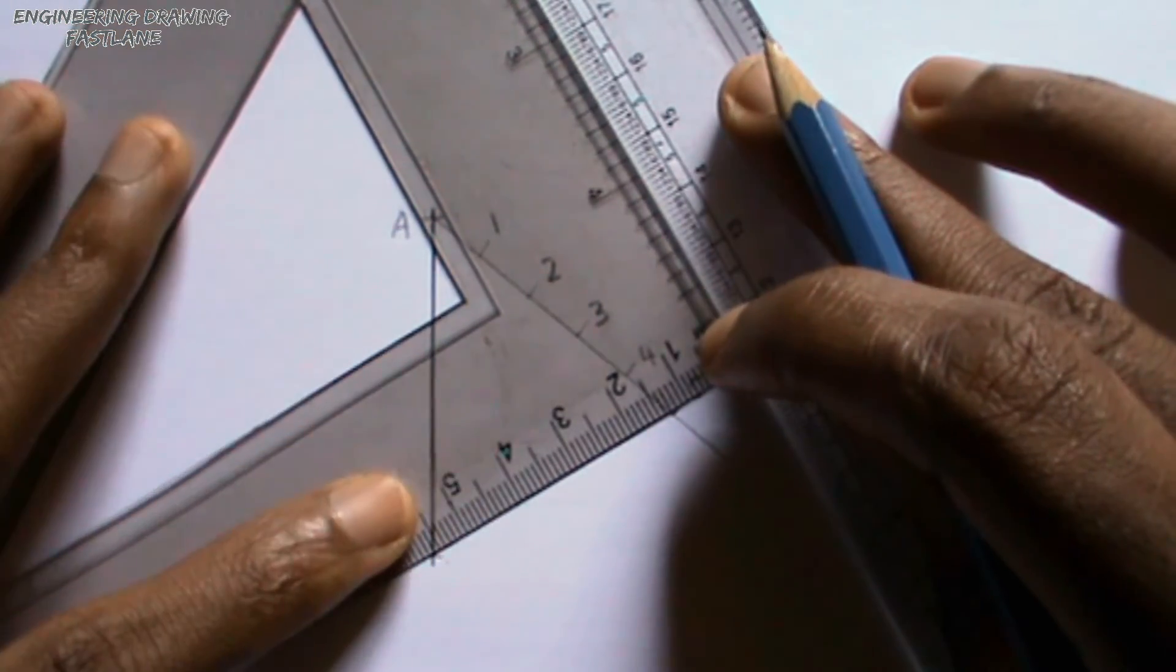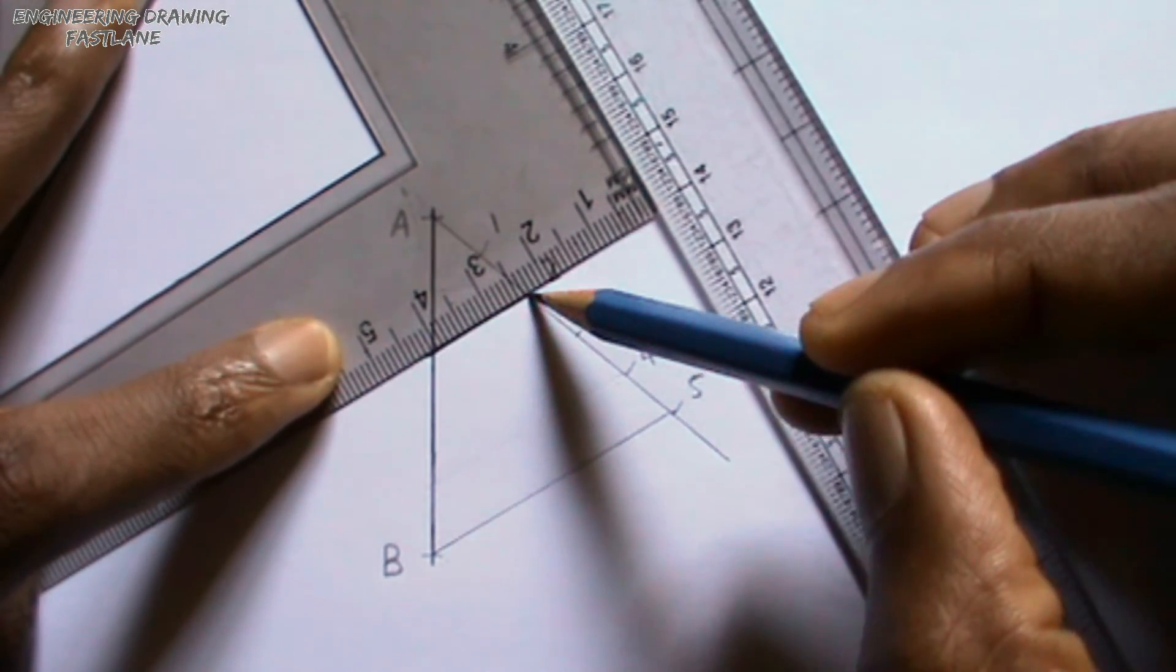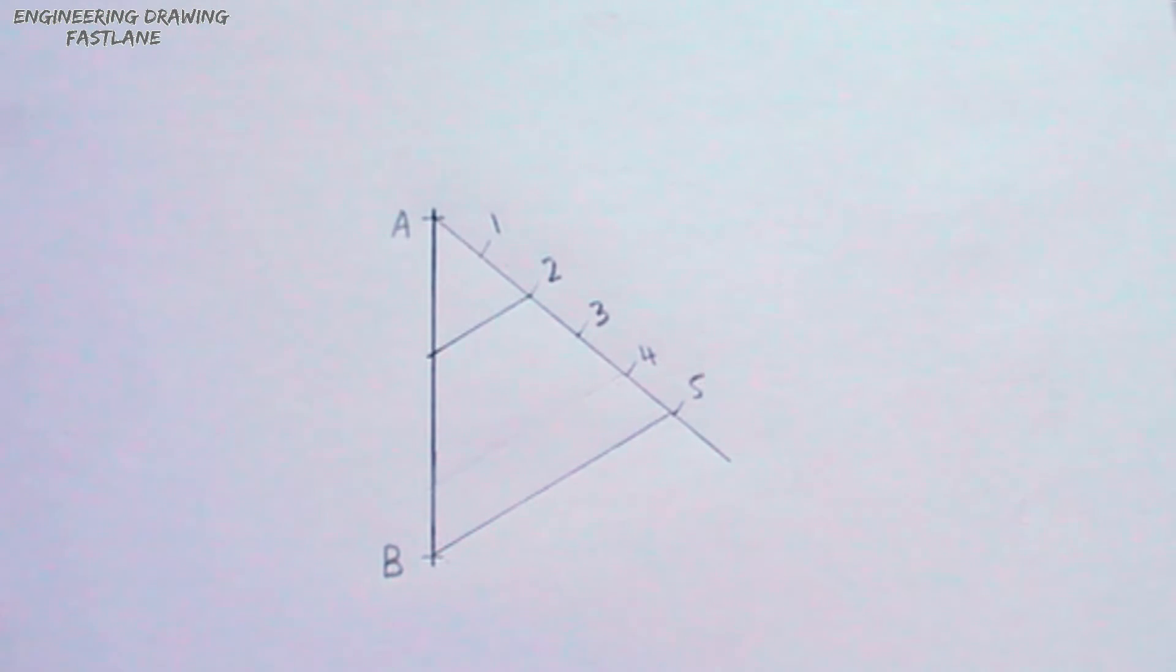I will then slide my set square through my ruler in order to draw another line joining point 2 with line AB. This is because I am dividing line AB in a ratio of 2 is to 3.